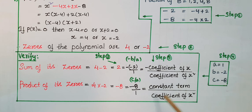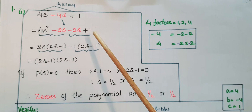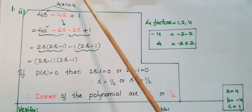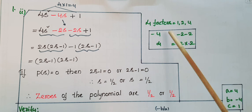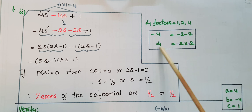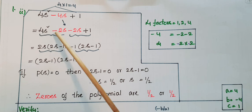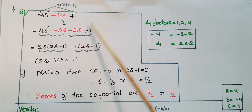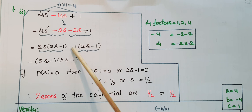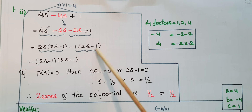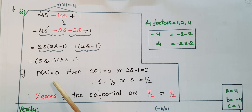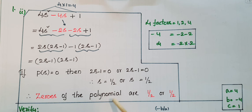Next polynomial: 4s² - 4s + 1. Factorize by splitting the middle term -4s. Here 4 × 1 = 4, and -4 can be written as -2 + (-2), with (-2)×(-2) = 4. So 4s² - 2s - 2s + 1 = 2s(2s - 1) - 1(2s - 1) = (2s - 1)(2s - 1). Setting p(s) = 0: s = 1/2 or s = 1/2.